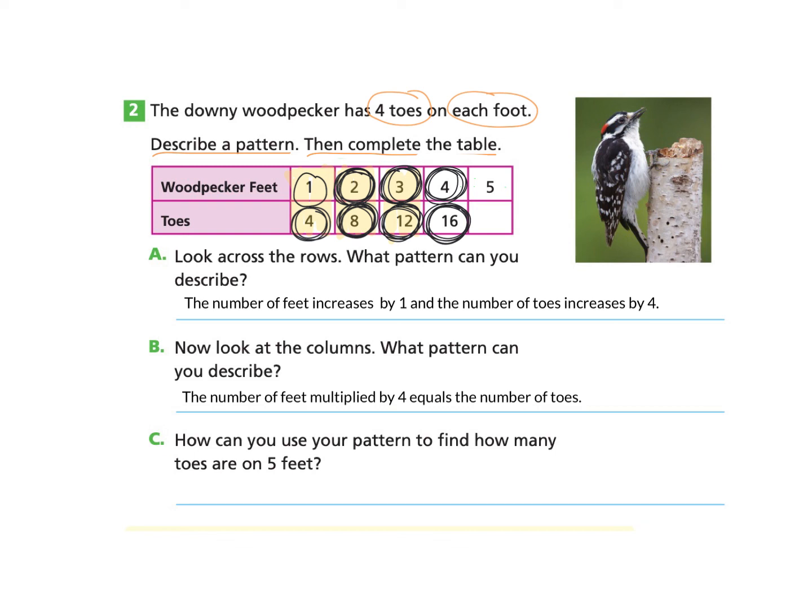Part C asks, how can you use your pattern to find how many toes are on five feet? If you'd like to pause and try this on your own, you may. Otherwise you can follow along with me. So if I'm looking at my pattern that I found right here, that says the number of feet multiplied by four equals the number of toes, then I'm going to take that five and I'm going to multiply it by four. When I do that, I will get 20, which would be my answer. And I can explain my thinking by saying multiply the number of feet by four, which will give the answer of 20 toes.